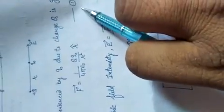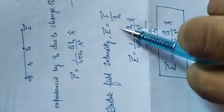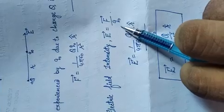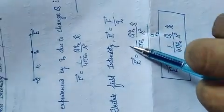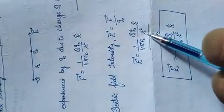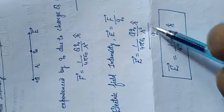This is equation number 1, and the electric field intensity E equals F upon Q naught. This is 1 by 4π epsilon naught, Q Q naught upon R square R cap, divided by Q naught.